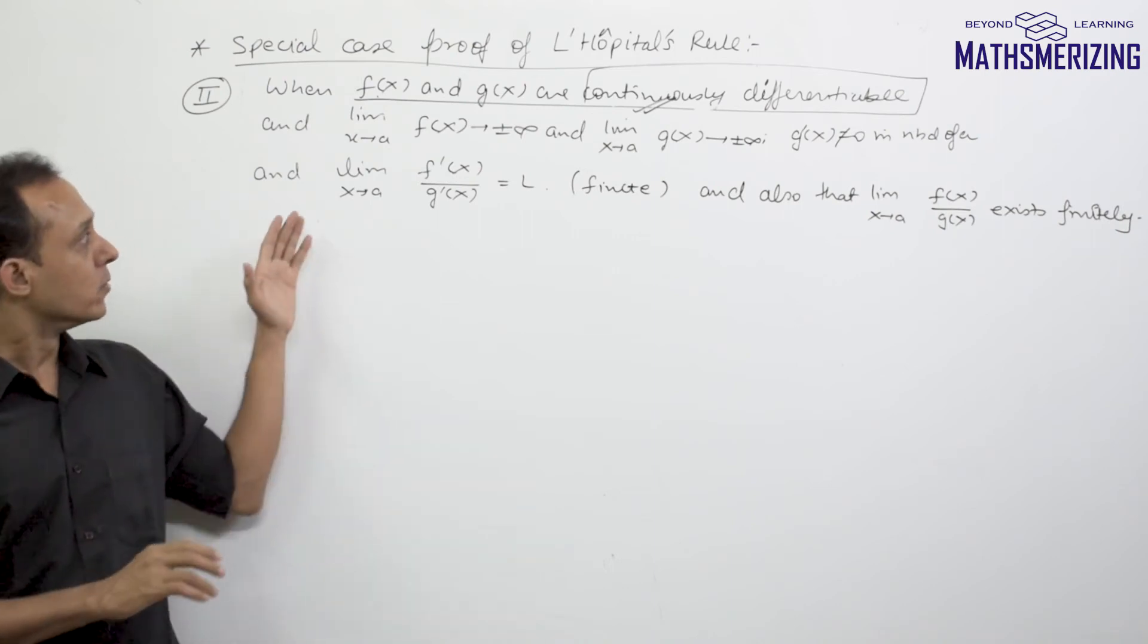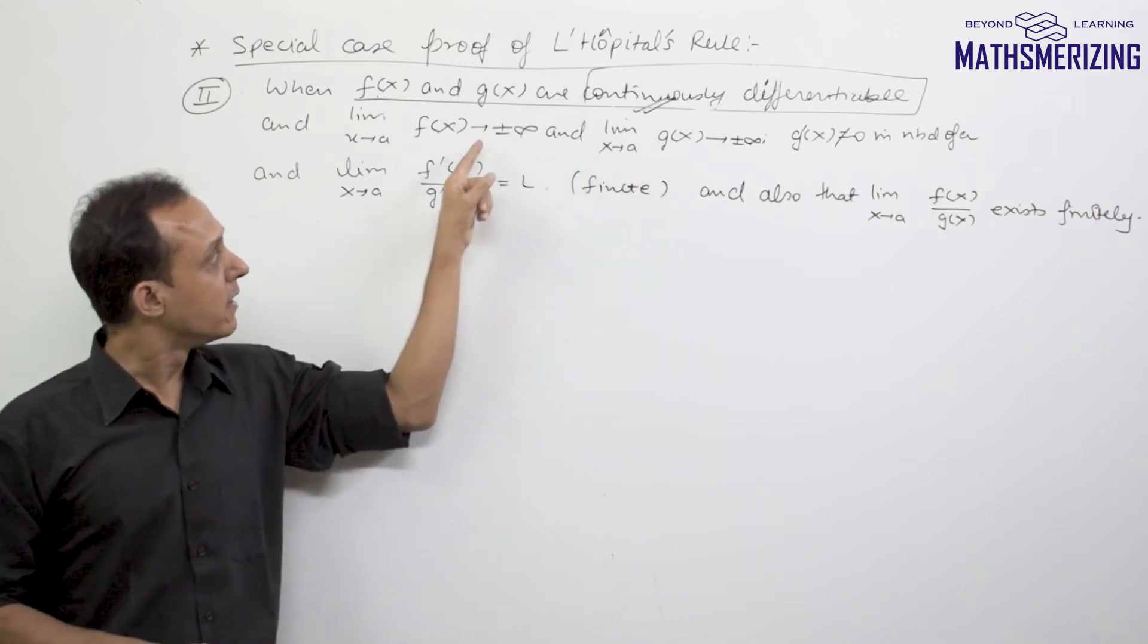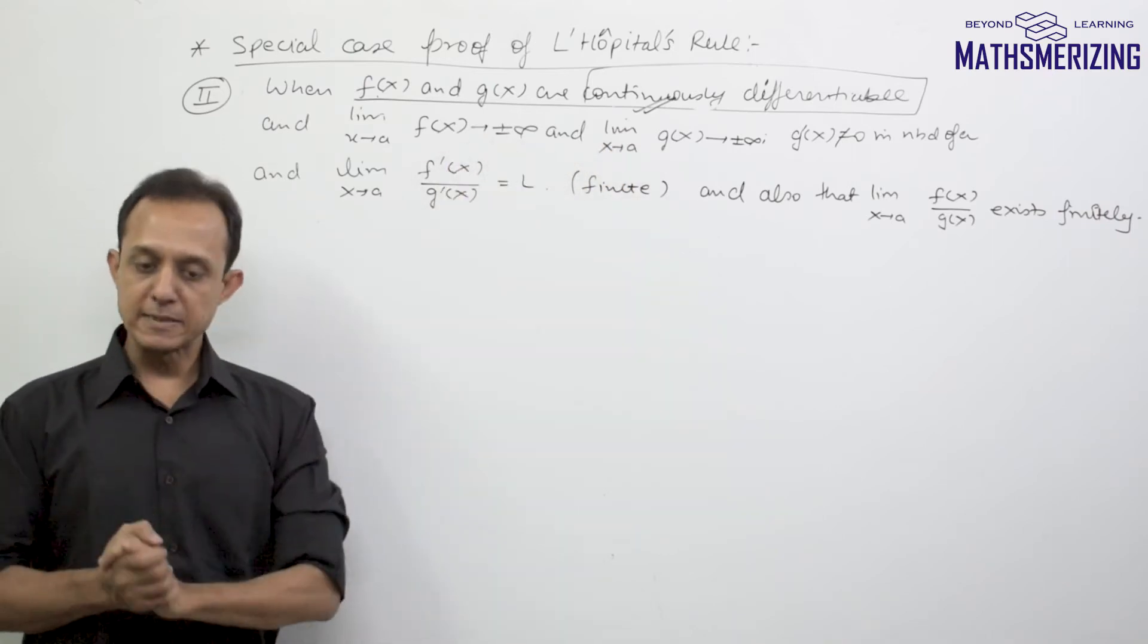Now let us take the second case of L'Hospital's rule when limit x tends to a of f(x) and limit x tends to a of g(x) tend to plus or minus infinity.